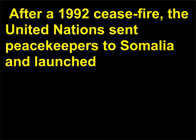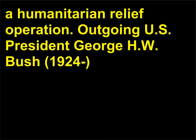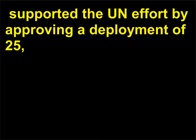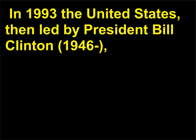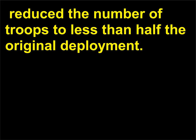After a 1992 ceasefire, the United Nations sent peacekeepers to Somalia and launched a humanitarian relief operation. Outgoing U.S. President George H.W. Bush, 1924, supported the U.N. effort by approving a deployment of 25,000 American troops to Somalia to help secure trade routes over which badly needed food supplies could move. In 1993 the United States, then led by President Bill Clinton, 1946, reduced the number of troops to less than half the original deployment.